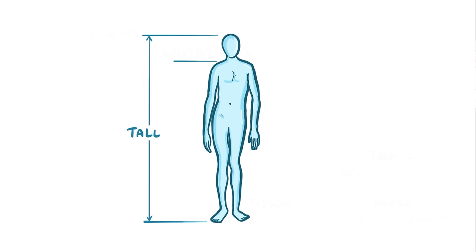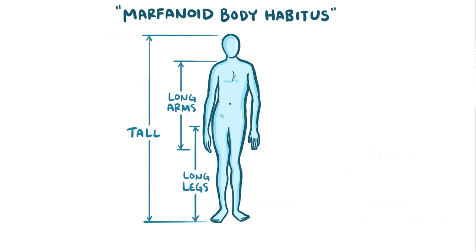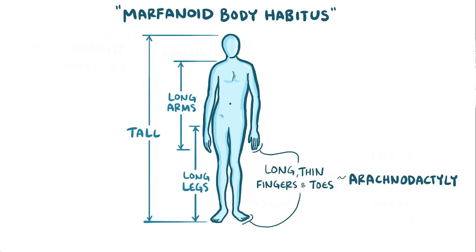The most obvious physical features of Marfan syndrome involve the skeleton. The long bones grow excessively, so individuals are tall with long arms and legs, and this is called a marfanoid body habitus. They have long, thin fingers and toes too, called arachnodactyly, which is a reference to the long legs of spiders.